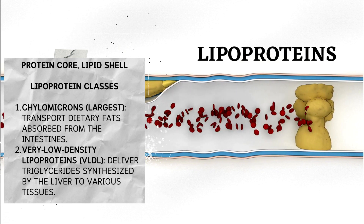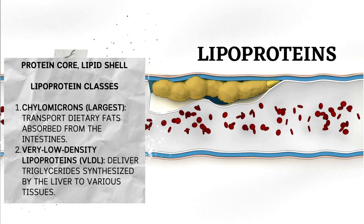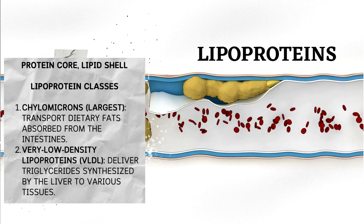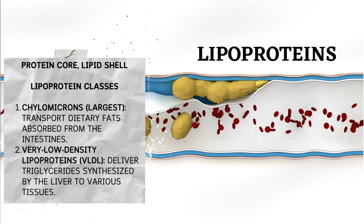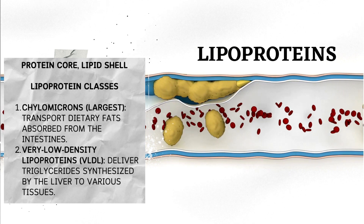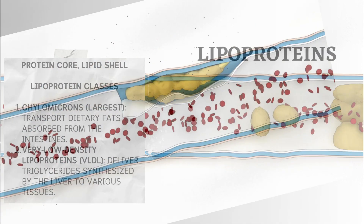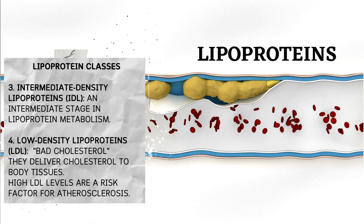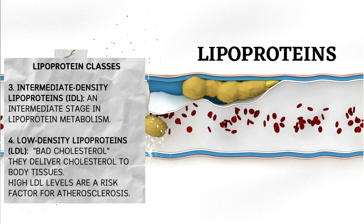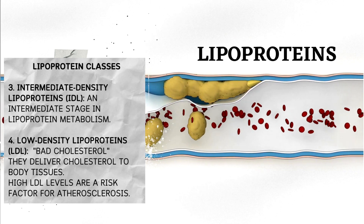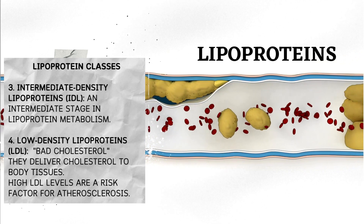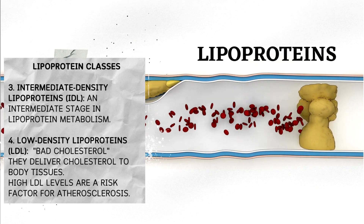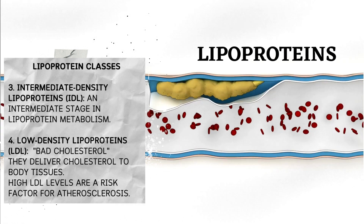The specific ratio of protein to lipid and the types of lipids involved determine the different classifications of lipoproteins. Major lipoprotein classes: Chylomicrons are the largest and transport dietary fats absorbed from the intestines. Very low-density lipoproteins (VLDL) deliver triglycerides synthesized by the liver to various tissues. Intermediate-density lipoproteins (IDL) are an intermediate stage in lipoprotein metabolism. Low-density lipoproteins (LDL), often referred to as bad cholesterol, deliver cholesterol to body tissues.